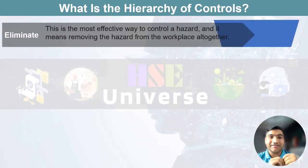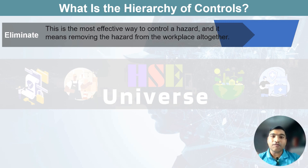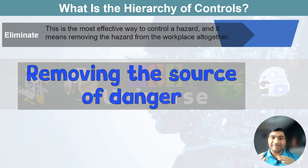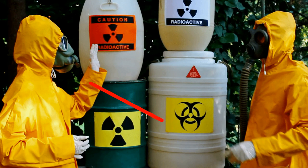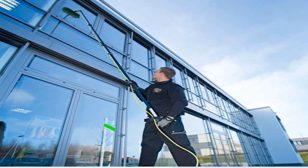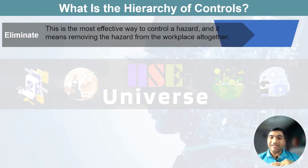At the very top of the hierarchy we have the most effective control measure, which is to eliminate the hazard altogether. Think of it as removing the source of the danger. For example, ending the use of hazardous material, doing work at the ground level rather than at heights, or stopping the use of noisy processes or equipment. These are examples of elimination.